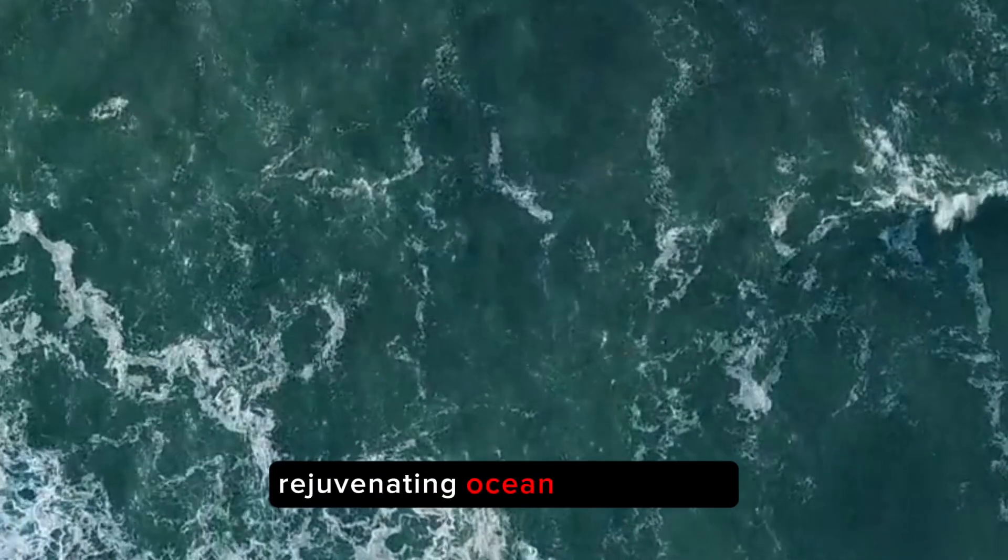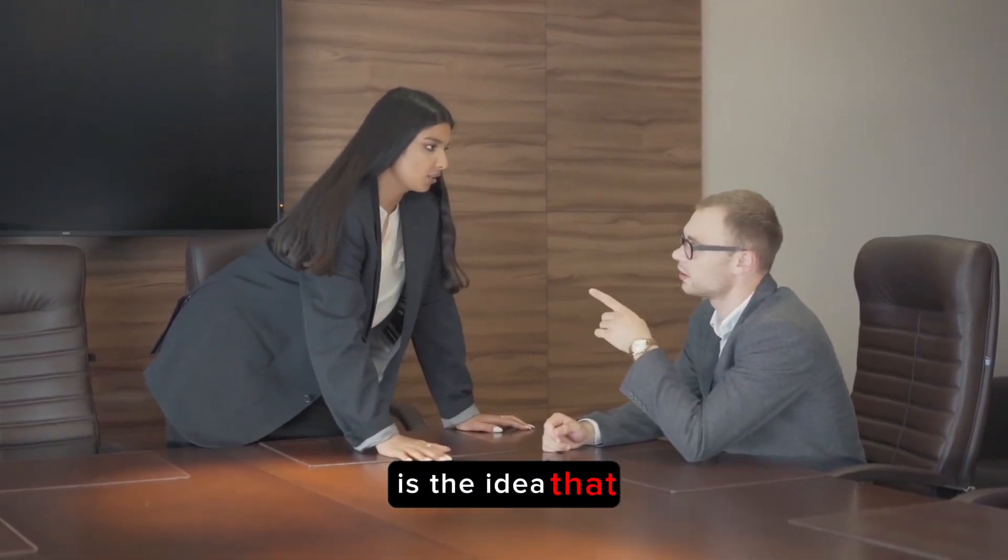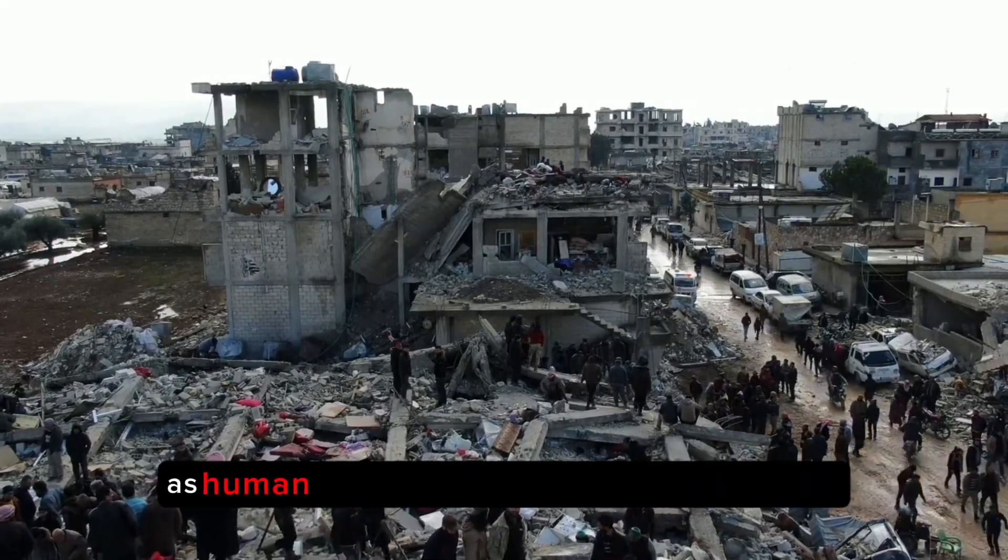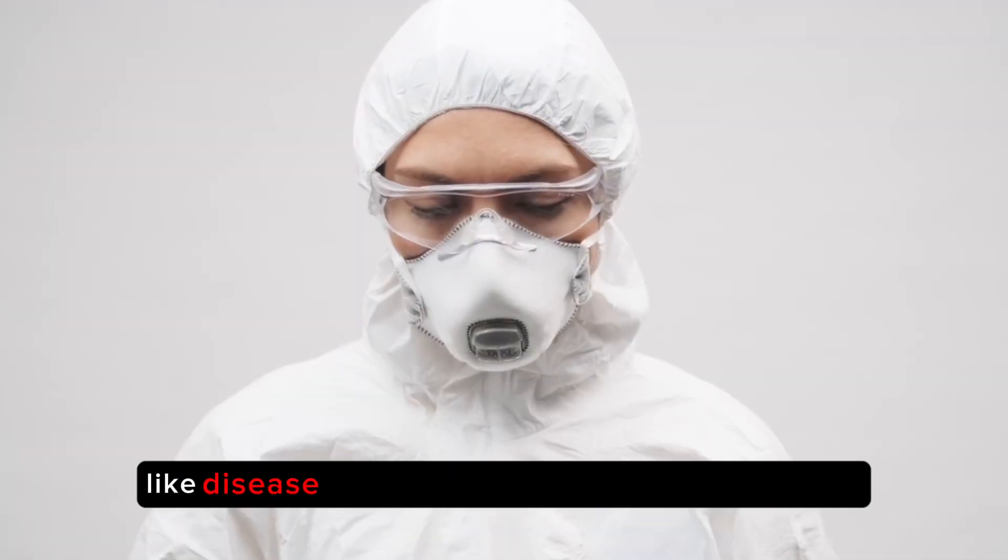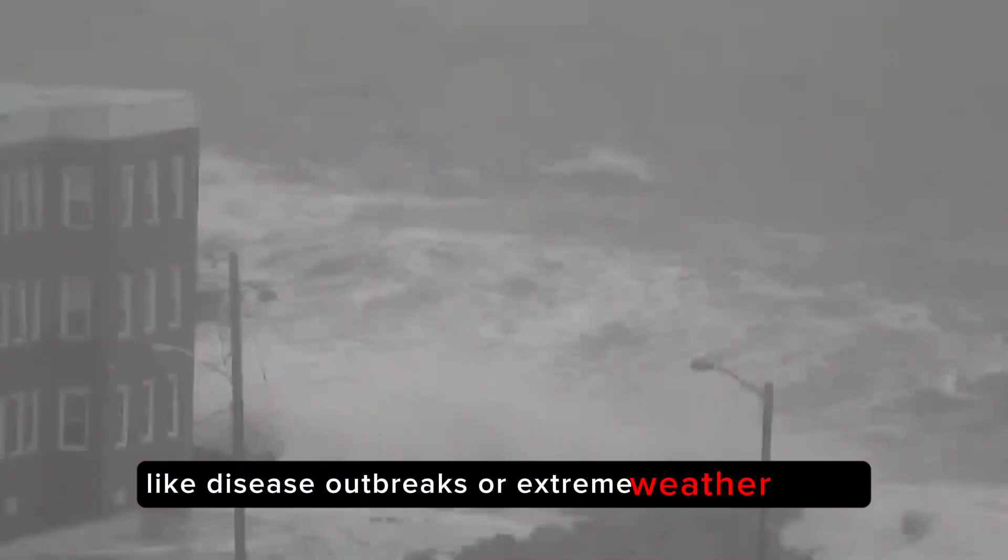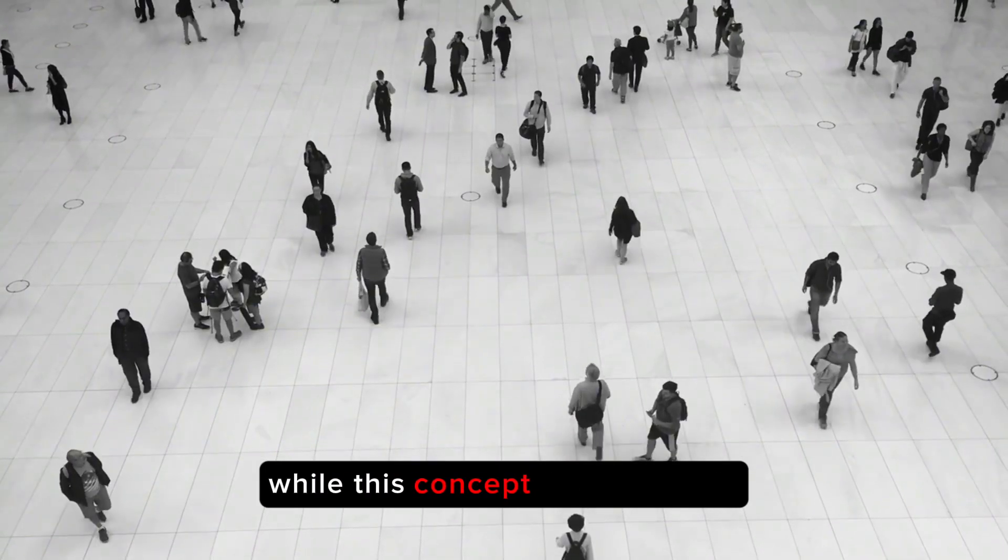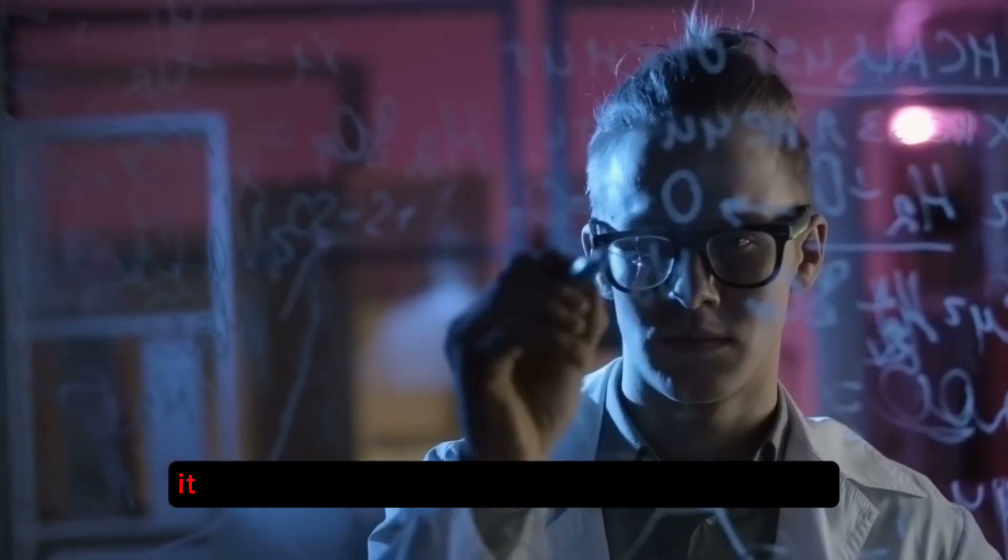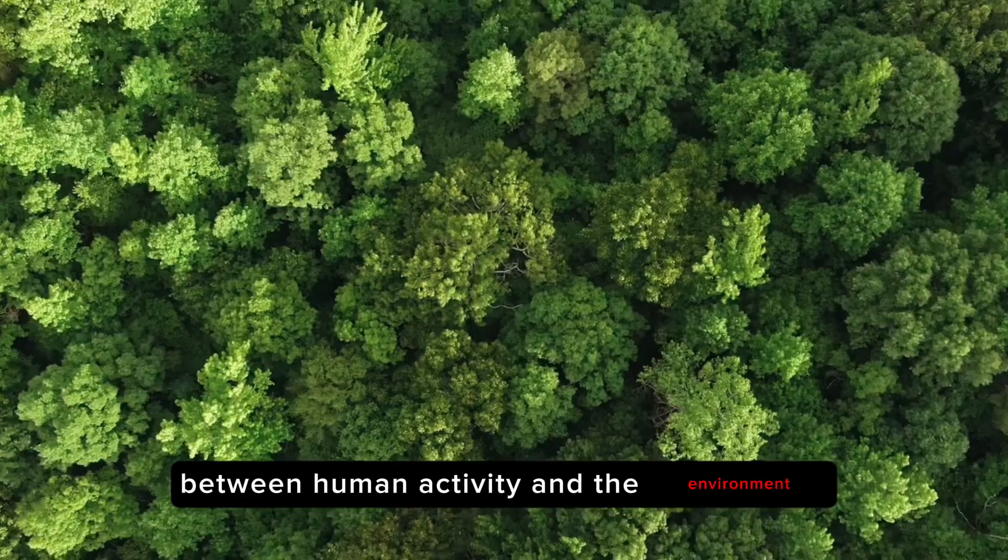Another controversial aspect of this theory is the idea that natural disasters play a role in population control. As human populations continue to grow rapidly, proponents suggest that certain natural disasters, like disease outbreaks or extreme weather events, may act as checks on human numbers. While this concept is contentious and not supported by scientific evidence, it raises questions about the delicate balance between human activity and the environment.